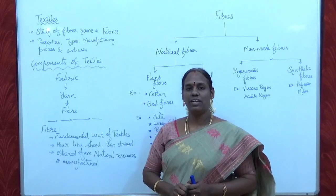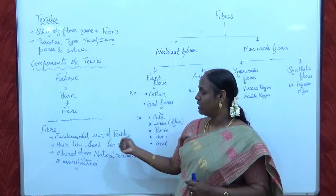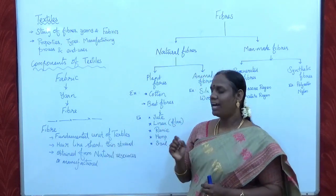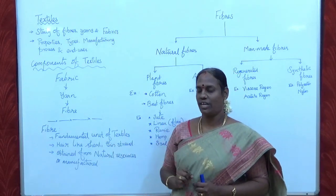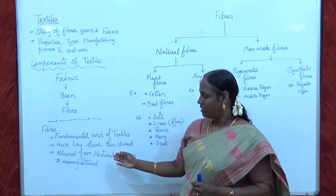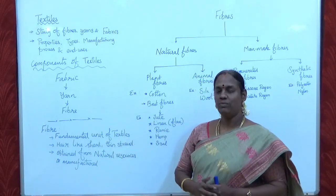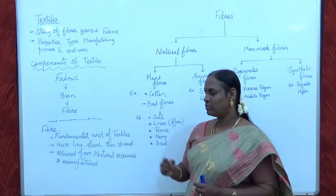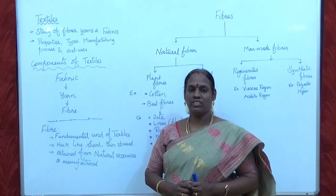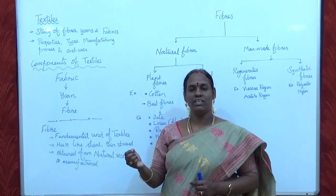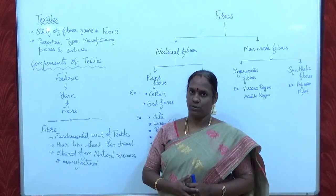Now we are going to see about fibre and the definition of fibre. Fibre is a fundamental unit of textiles. It is a hair-like, short, thin strand. Mainly, fibres are obtained from natural resources or manufactured from various mechanical or chemical processes.